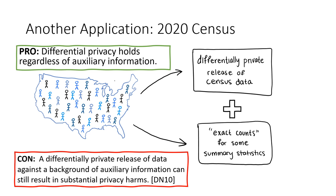Why might releasing these exact counts become an issue? One of the benefits of differential privacy is that it's said to hold regardless of the presence of auxiliary information, because differential privacy is a relative guarantee just on the mechanism, not on overall privacy due to all information available in the world. However, this means that a differentially private release against a background of auxiliary information can still result in substantial privacy harms. So knowing that some census data is differentially private doesn't tell us anything about privacy impacts when we combine that release with these exact counts.